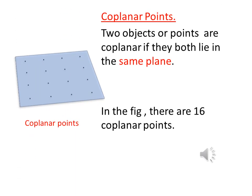Similar to collinear points, we have another set of points called coplanar points. Coplanar points are those points that lie on the same plane. The only difference between the two sets is that collinear points lie on the same line while coplanar points lie on the same plane. In the figure, there are some 16 coplanar points as they all lie on the same plane.